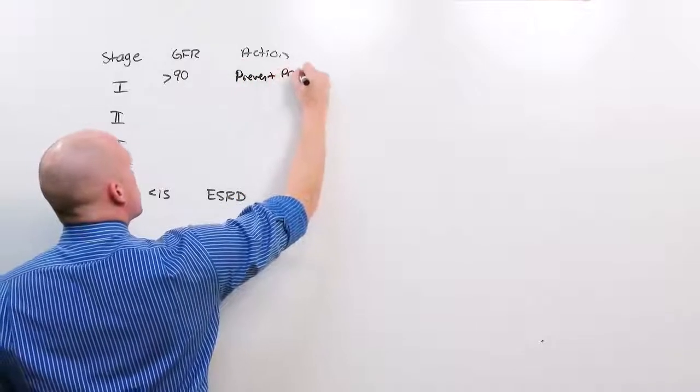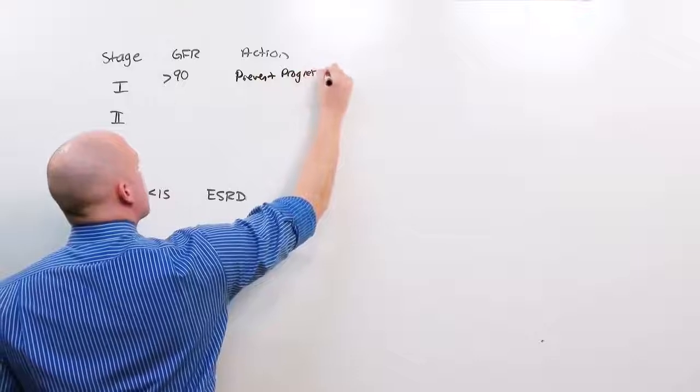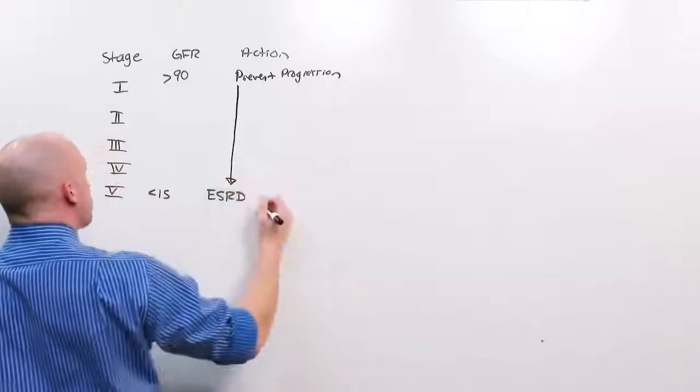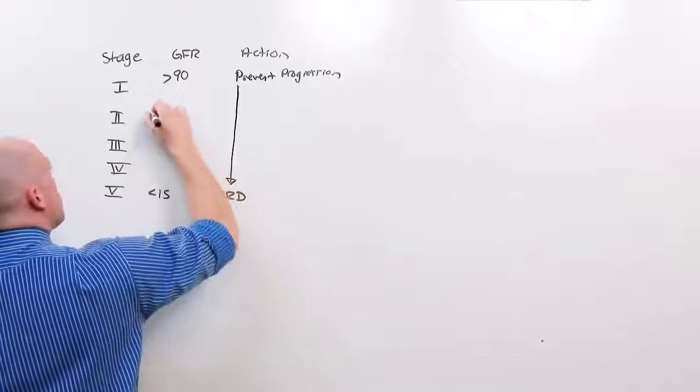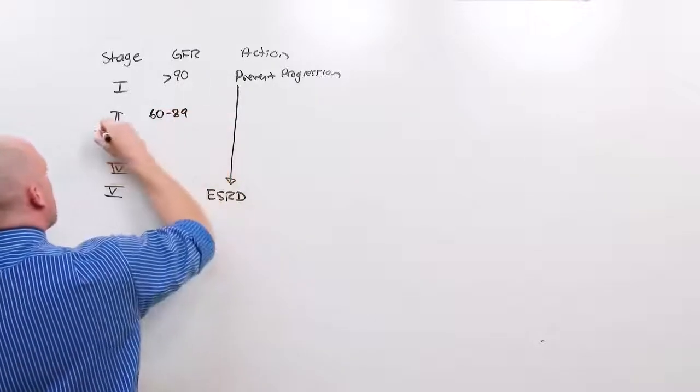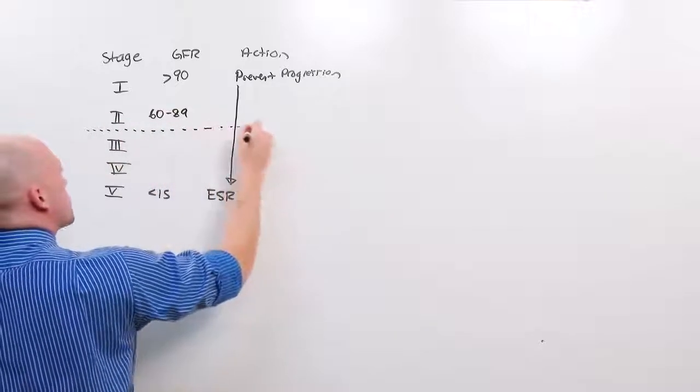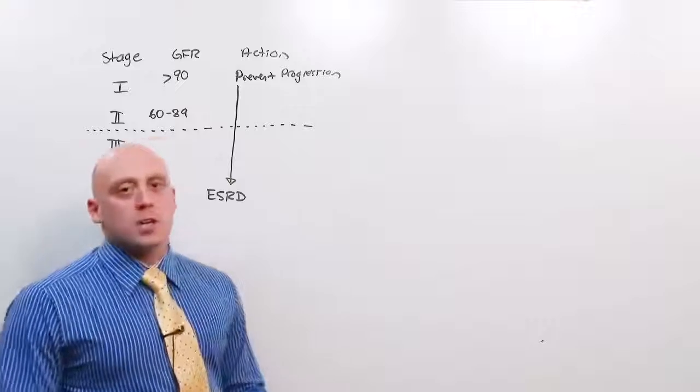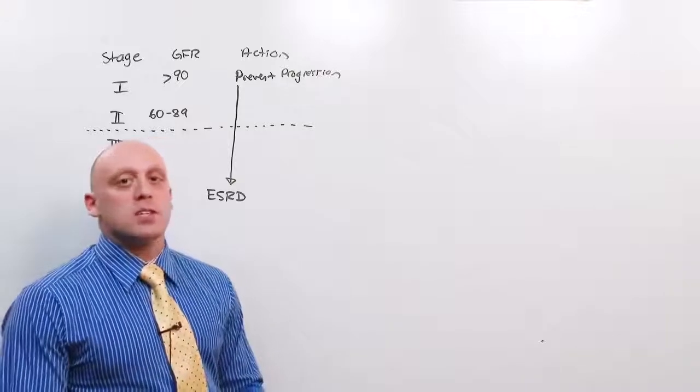You're always going to want to prevent progression. This never changes. So for every stage, prevent progression. Stage 2 has a GFR of 60 to 89. And stage 2 is really no different than stage 1 except the GFR is reduced. You don't really start seeing the complications of chronic kidney disease until you get into stage 3.